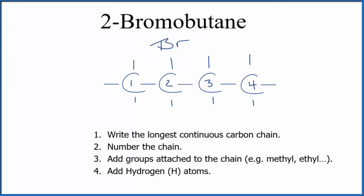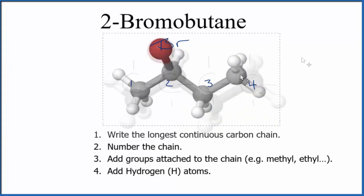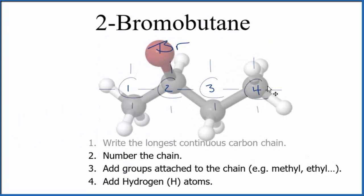If you wanted to look at a molecular model, that would look like this. So again, we have butane — a four carbon chain — the whites are the hydrogens, and then on the second carbon right here, we have bromine. So this is the structural formula and the molecular model for 2-bromobutane.